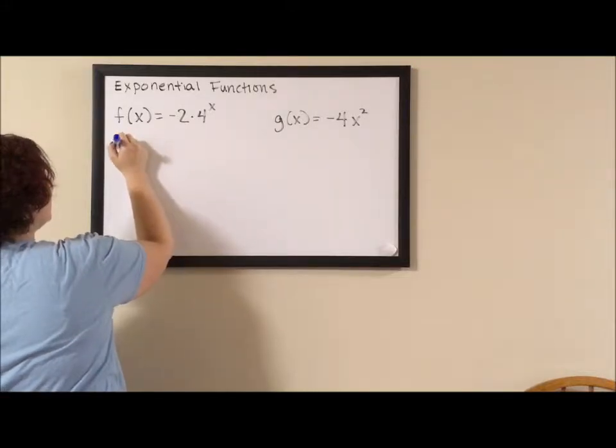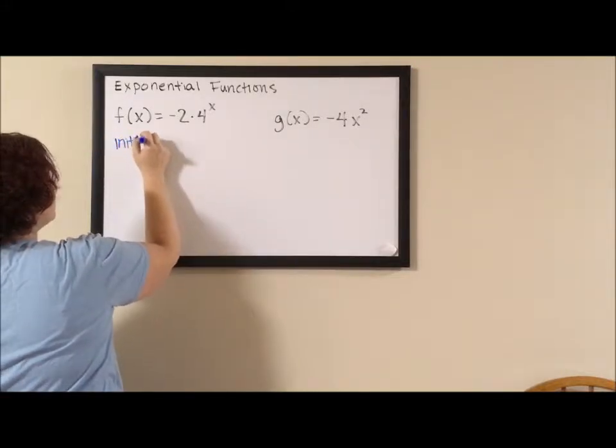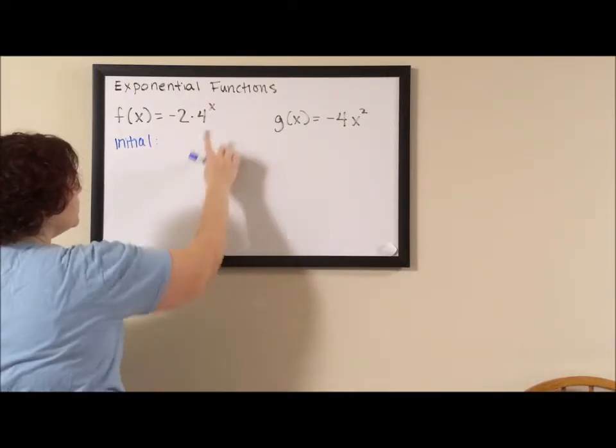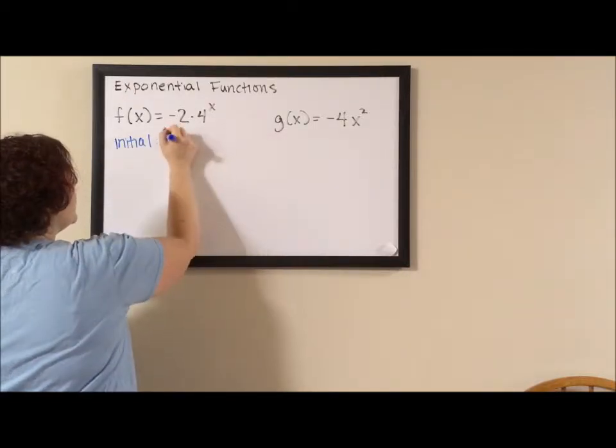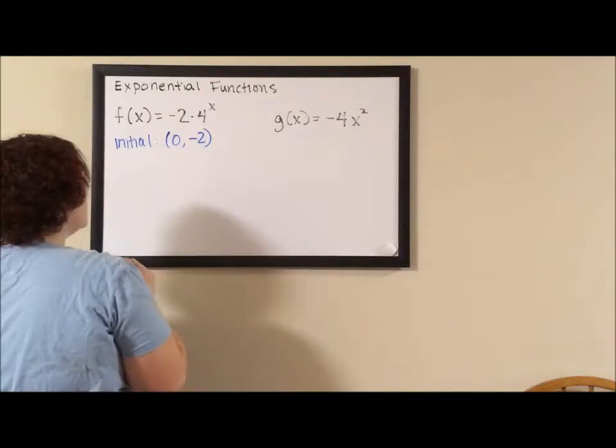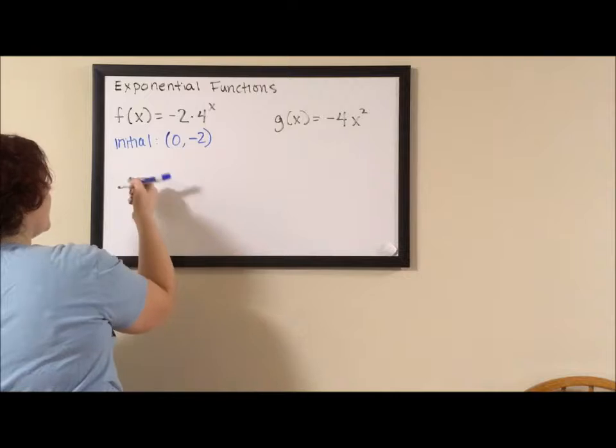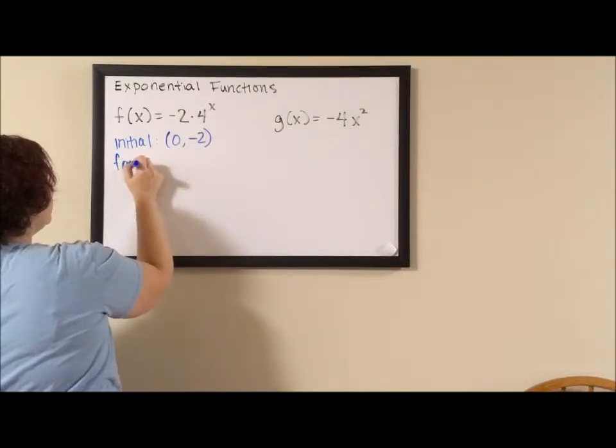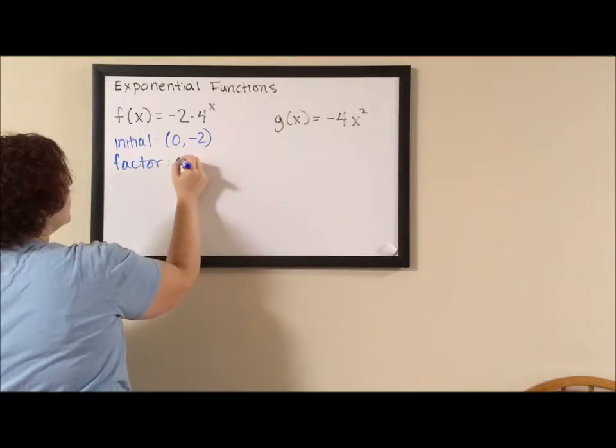The initial value, where we cross the vertical axis when x equals 0, is negative 2. The growth factor, because it's bigger than 1, is 4.